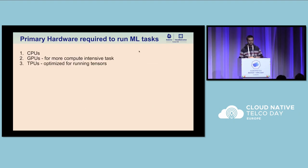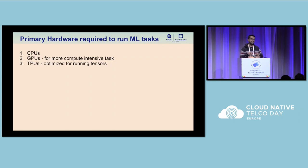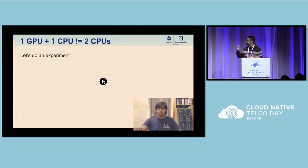Talking about the primary hardware used to run machine learning tasks: we start with CPUs, and for more compute-intensive tasks, GPUs are more optimized — especially for deep learning. TPUs, or tensor processing units, are also optimized for those workloads. As you work with larger models, you'll primarily use a combination of CPUs, GPUs, and TPUs. But there are challenges when choosing the right hardware configuration, and that's where Rishit's pre-recorded segment comes in.